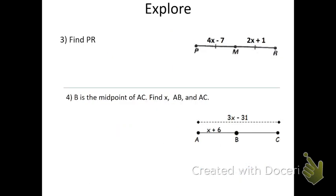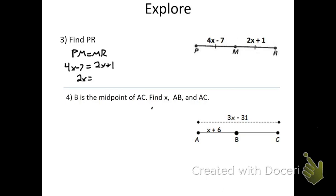Two more questions. On this one, it says find PR. It doesn't outright tell you that M is the midpoint, but due to this marking and this marking, we know that M is the midpoint — that marking says PM has the same length as MR. So if PM equals MR, then 4X minus 7 must equal 2X plus 1. The question says find the length of PR, which is the whole thing.